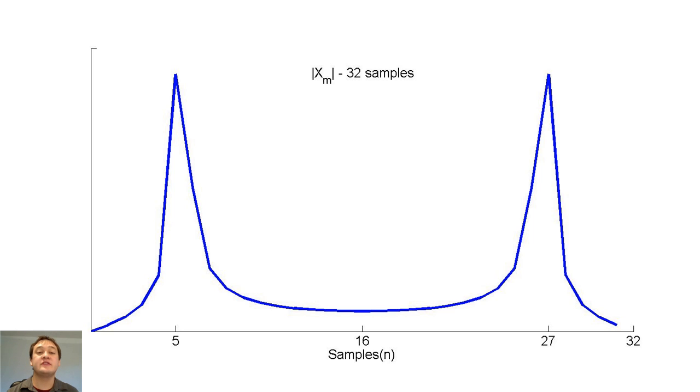Notice how the DFT is no longer a perfect impulse function. Also, notice that the peak at sample 5 corresponds to positive omega naught, and the peak at sample 27 corresponds to negative omega naught.